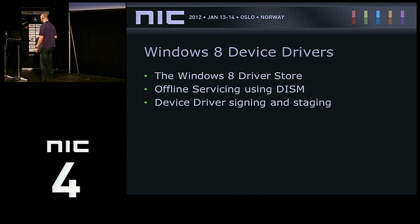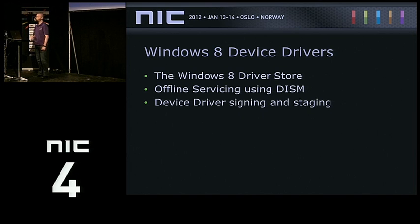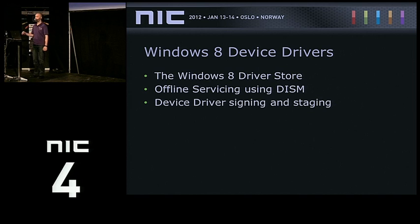If you know that a machine is going to have a printer, scanner, camera, or phone connected, you can, as part of your deployment process, make sure that driver is staged into the driver store. When the user connects their phone, it will be installed happily — but it's not in the user context anymore. It's the local plug-and-play service in Windows 8 that does the installation. This allows you to have users as normal users and still be able to deploy devices.